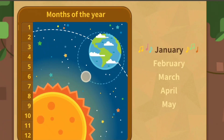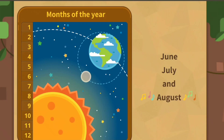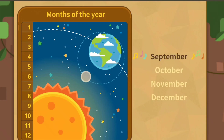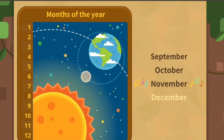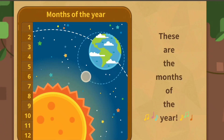January, February, March, April, May, June, July, August, September, October, November, December. These are the months of the year.